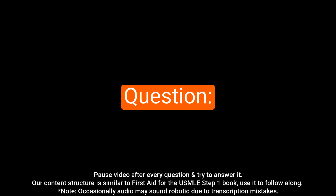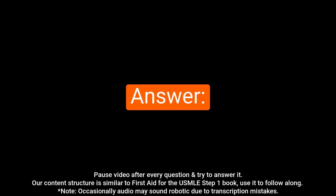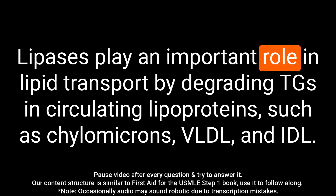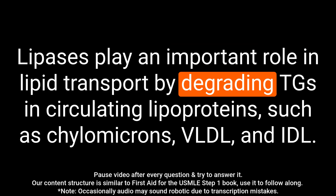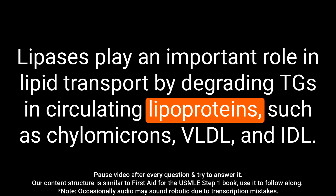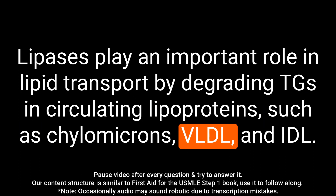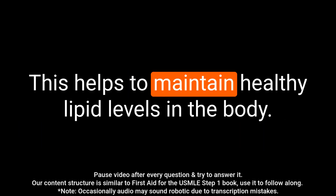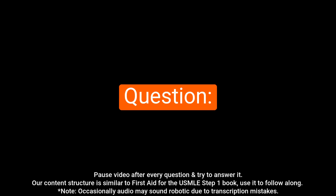Question: What is the role of lipases in lipid transport? Answer: Lipases play an important role in lipid transport by degrading TGs in circulating lipoproteins such as chylomicrons, VLDL, and IDL. This helps to maintain healthy lipid levels in the body.